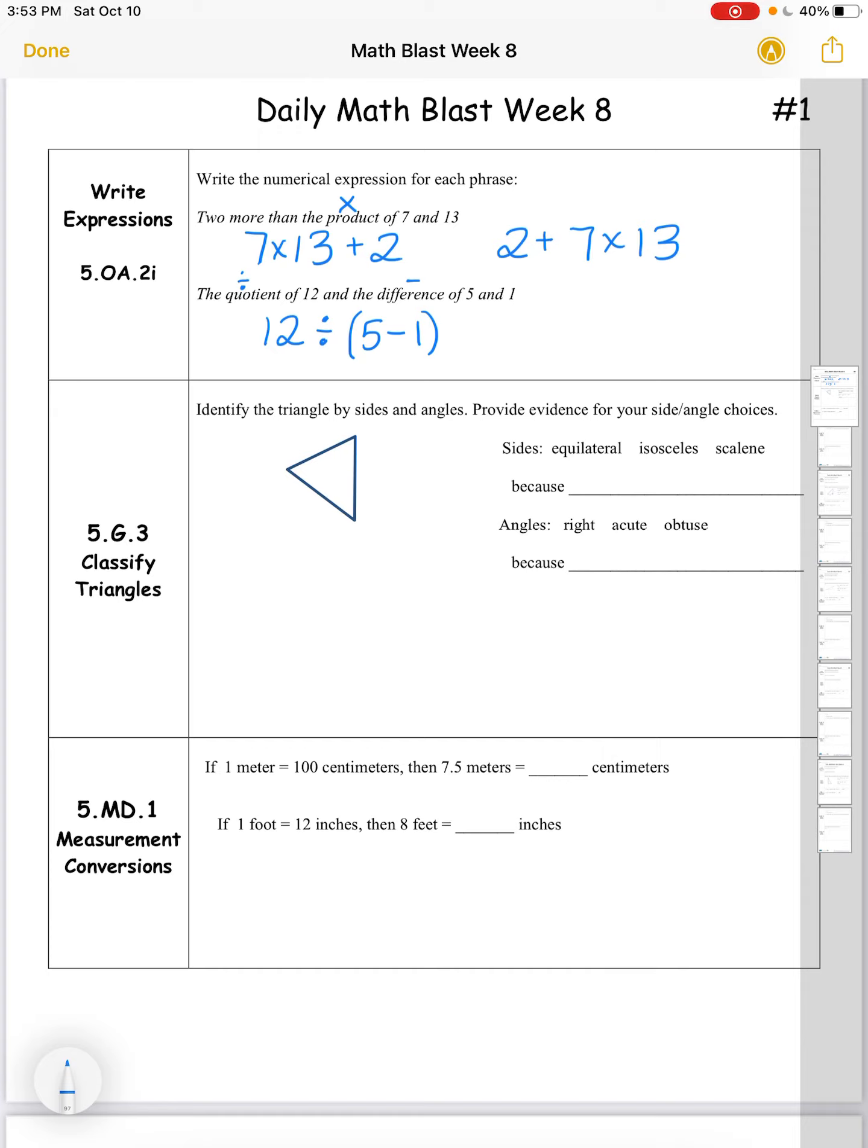Classify triangles. Identify the triangle by sides and angles. Provide evidence for your side angle choices. Sides: equilateral. An equilateral triangle has all equal sides, and this triangle looks like it could have all equal sides. However, be careful because as I measure it, it really looks like this side here is a little longer than the other two sides that are equal to each other. This and this would be equal. So we're going to call this an isosceles triangle because an isosceles triangle has at least two equal sides, while a scalene triangle is a triangle that has no equal sides.